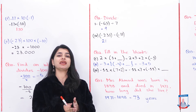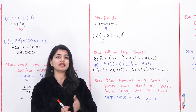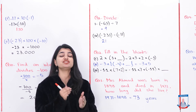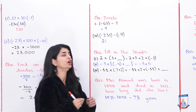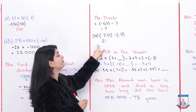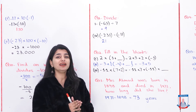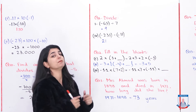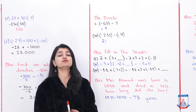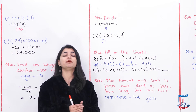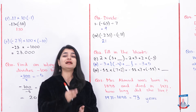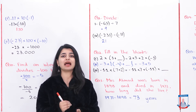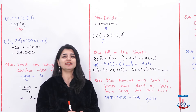One number has a minus sign and the other has a positive sign — the signs are different. When different signs are divided, you use the negative sign. So the answer is minus 9. The meaning of this: 7 multiplied by negative 9 equals negative 63. You can also verify this.